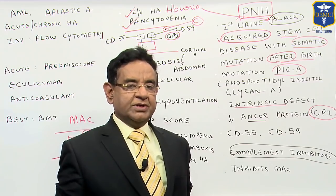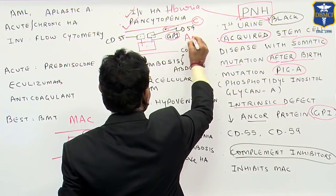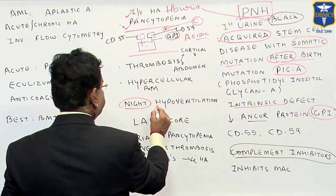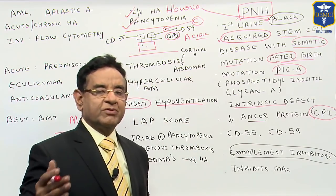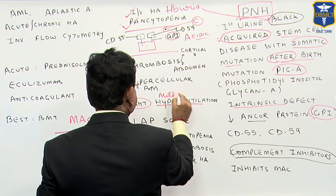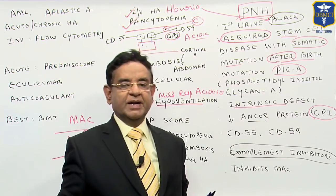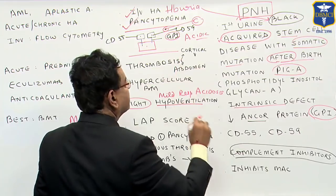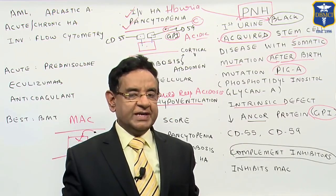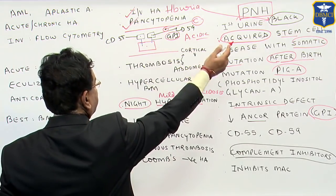The million dollar question is: why does it happen only at night? The reason is that complement is activated in an acidic medium. At night when we sleep, we all have hypoventilation, so everybody has a mild respiratory acidosis. That leads to acidic medium in the blood, complement is activated, hemolysis occurs, and you get the first morning urine sample black because of hemoglobinuria. But in the daytime, this hypoventilation is not there, the acidic medium is not there, so hemolysis does not occur.